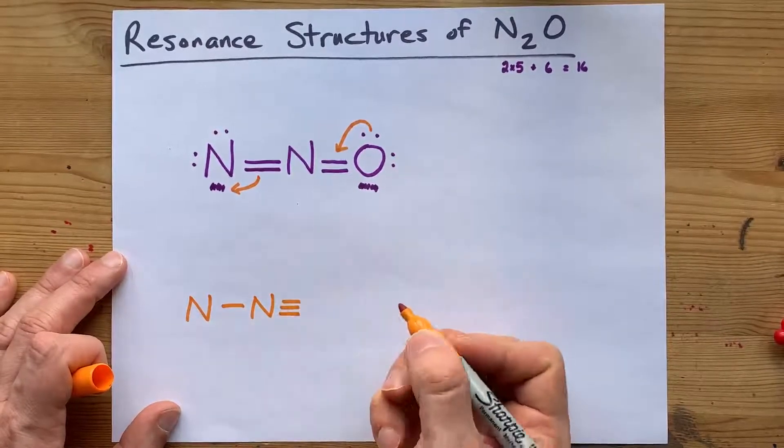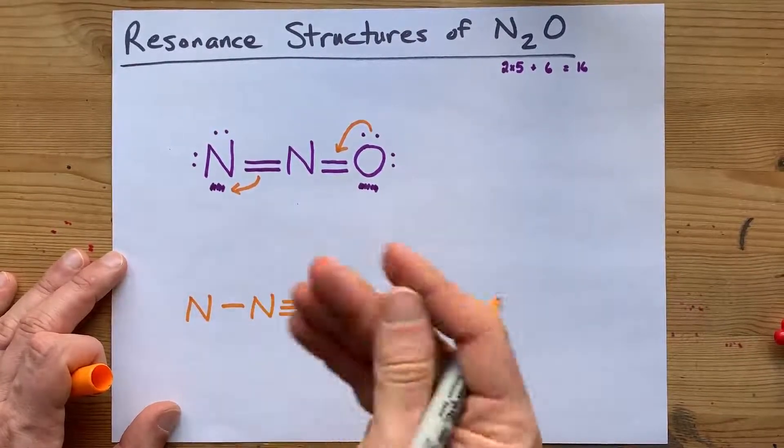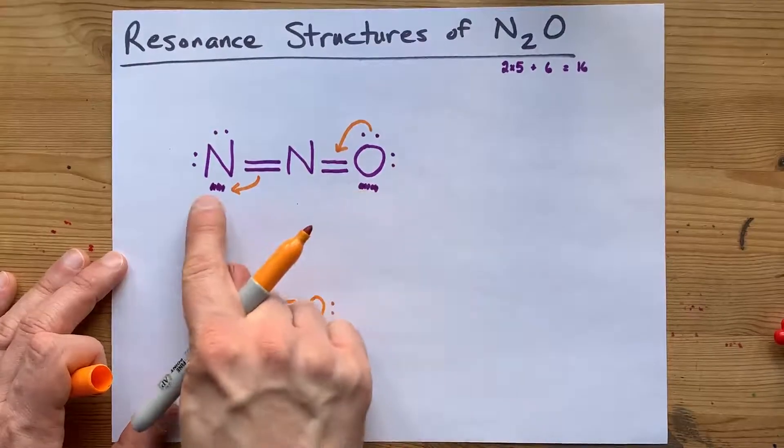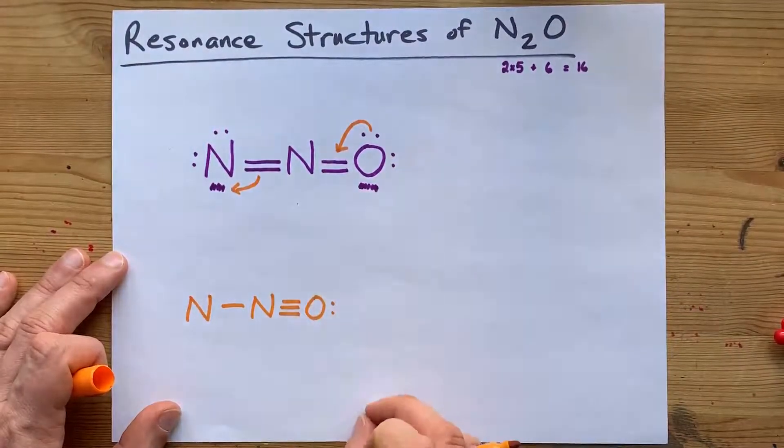That would give me an N with the N. And, you know what, it kind of looks like this is what we would have gotten if instead of moving that pair and that pair to make double bonds, we'd have moved two of these pairs to make a triple bond.